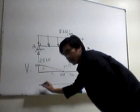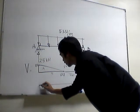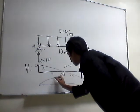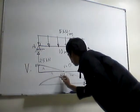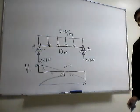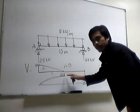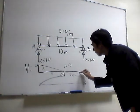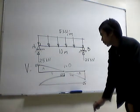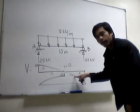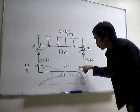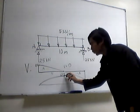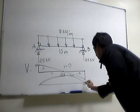The shape of the moment diagram is a curve. Then 62.5 minus the area of the shear diagram on the other half, which is also 25 multiplied by 5 divided by 2, gives negative 62.5. So 62.5 minus 62.5 gives you 0. This is the shape of the moment diagram for this type of loaded beam.